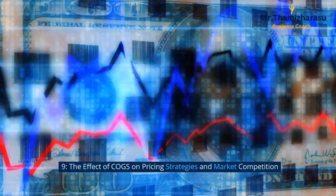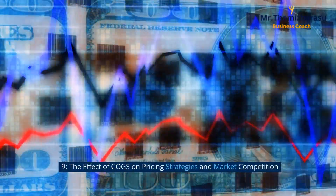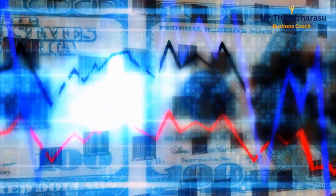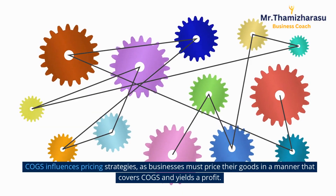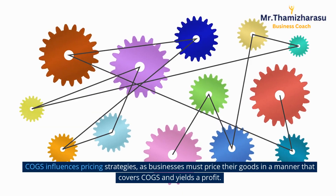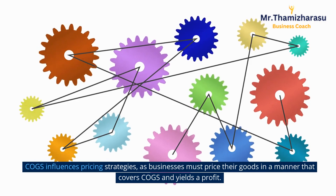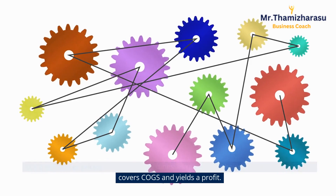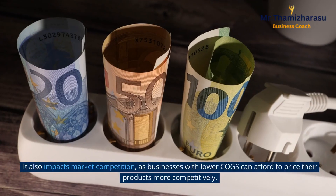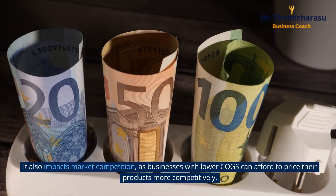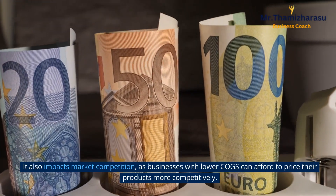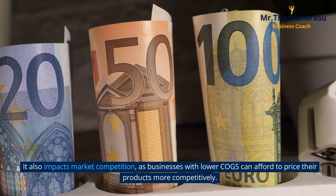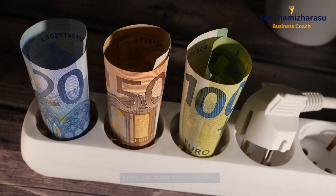9. The Effect of COGS on Pricing Strategies and Market Competition. COGS influences pricing strategies, as businesses must price their goods in a manner that covers COGS and yields a profit. It also impacts market competition, as businesses with lower COGS can afford to price their products more competitively.